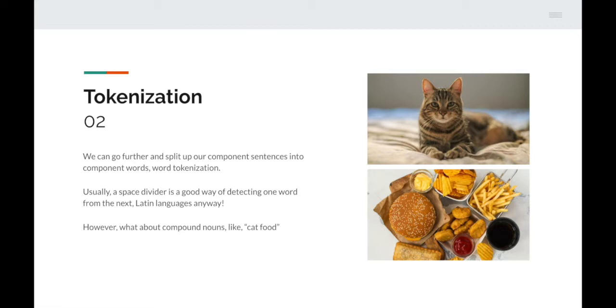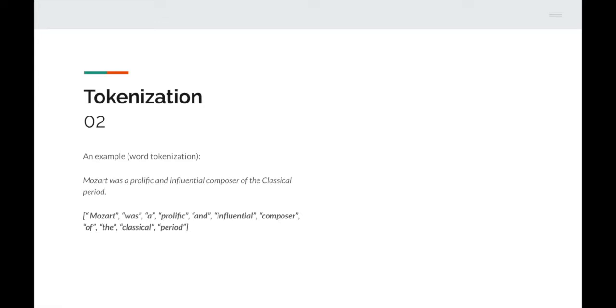Here's an example of word tokenization — one of the sentences from earlier split up into individual words: 'Mozart was a prolific and influential composer of the classical period.'